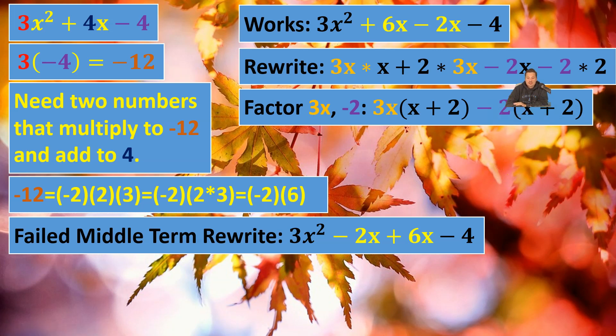Remember this important bit, which is that because that negative is with the 2, the purple 2, that goes outside. Which means what's left inside the parentheses is x + 2. In other words, a positive 2. So that's visible there above my head.